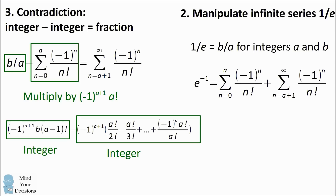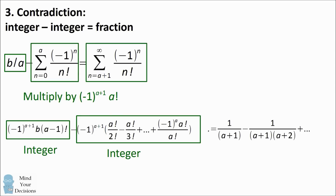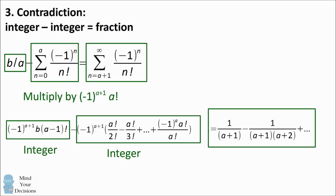So we now have an integer minus an integer being equal to whatever remains. When we multiply whatever remains by A factorial, we end up with the first term as 1 over A plus 1, and then the second term is minus 1 over the quantity A plus 1 times A plus 2. It's an alternating series, and every denominator will be larger — the next term will be 1 over A plus 1 times A plus 2 times A plus 3, and so on.